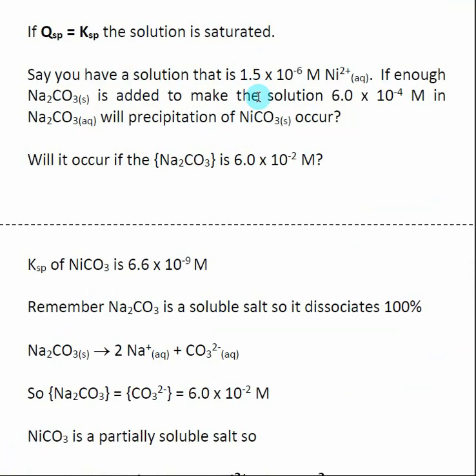I have a solution with a known concentration of nickel two plus, and then I start adding in carbonate in the form of sodium carbonate. I've given you two different concentrations that we're going to look at, and we want to know if a precipitate is going to form in either one of these two concentrations of carbonate.